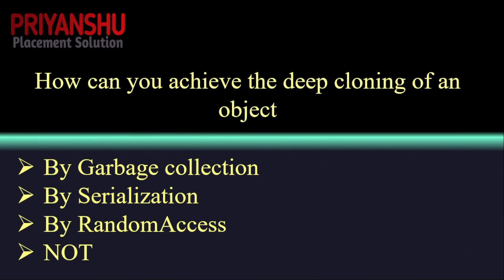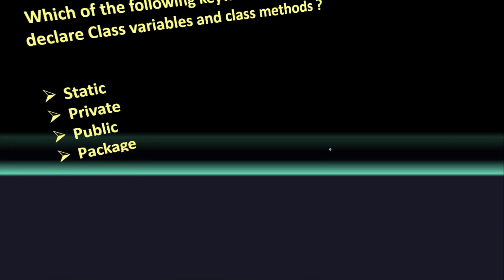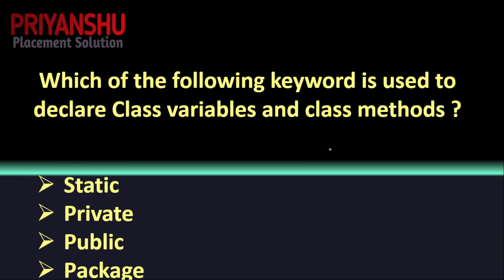The next question: how can you achieve deep cloning of an object? This is a pure Java concept. The answer is by serialization — you can achieve deep cloning of an object through serialization.